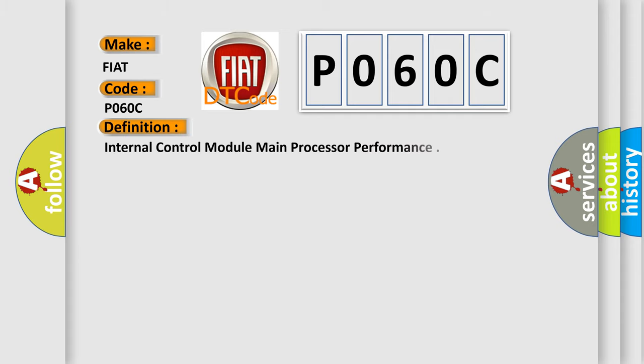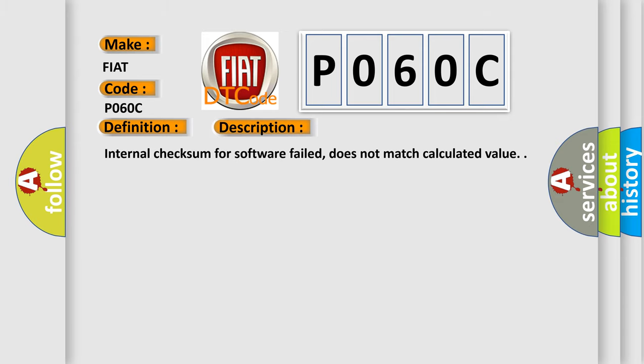The basic definition is Internal control module main processor performance. And now this is a short description of this DTC code: Internal checksum for software failed, does not match calculated value.